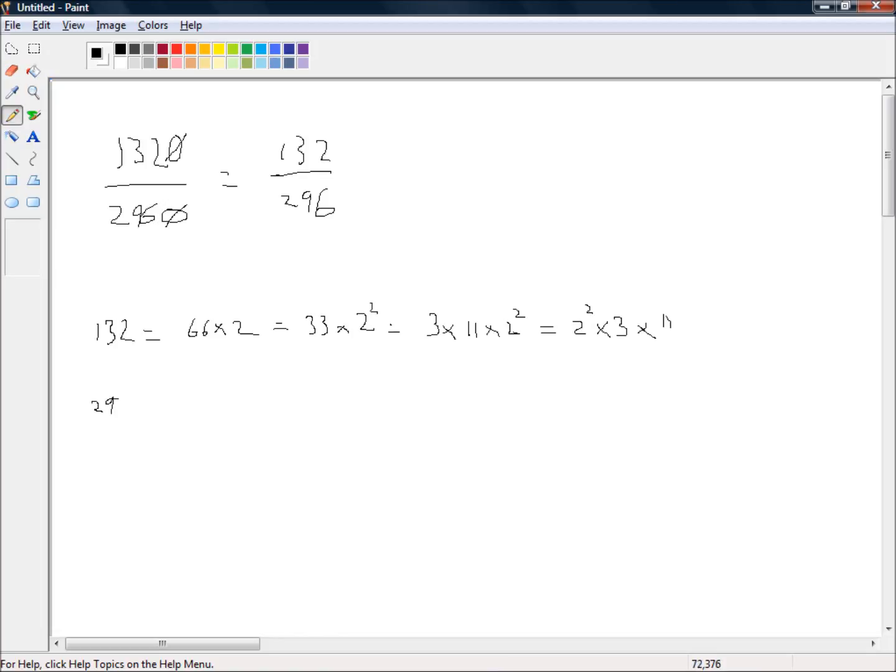So 296. Well 296 will also divide by 2. So that's 148 times 2. Okay, well 148 will also divide by 2. So that's 74 and now we've got an extra 2. So that's 2 squared.